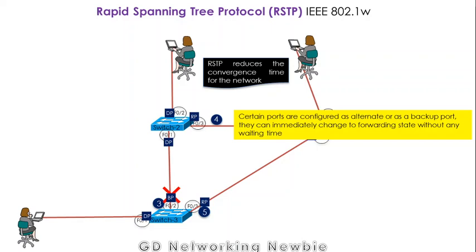In addition to that, there are certain ports configured in RSTP known as alternate ports and backup ports. These are ports which can immediately change their state to forwarding state without any waiting time. In STP, when we had to change to the forwarding state, we were bound to wait 15 seconds plus 15 seconds. Here we don't have to wait at all, which saves convergence time — this is also one of the improvements made in RSTP.